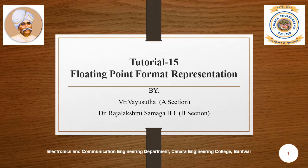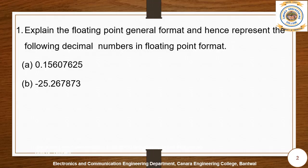Hello everyone, let us begin with tutorial number 15: Floating Point Format Representation. First problem: explain the floating point general format and hence represent the following decimal numbers in floating point format. First one, A: 0.15607625. B: minus 25.267873.